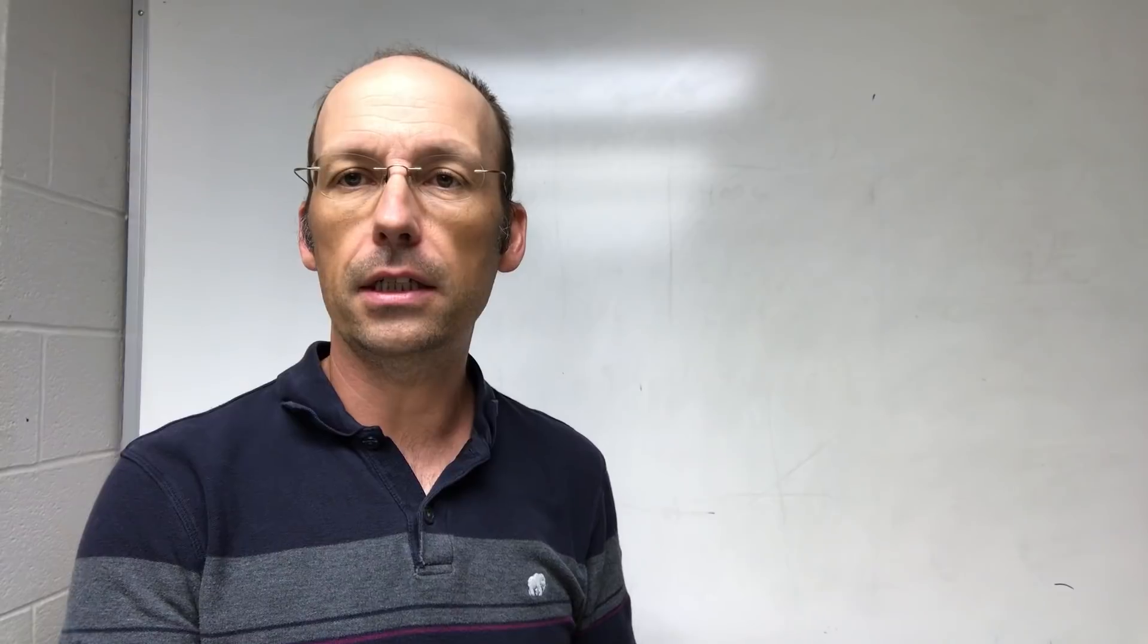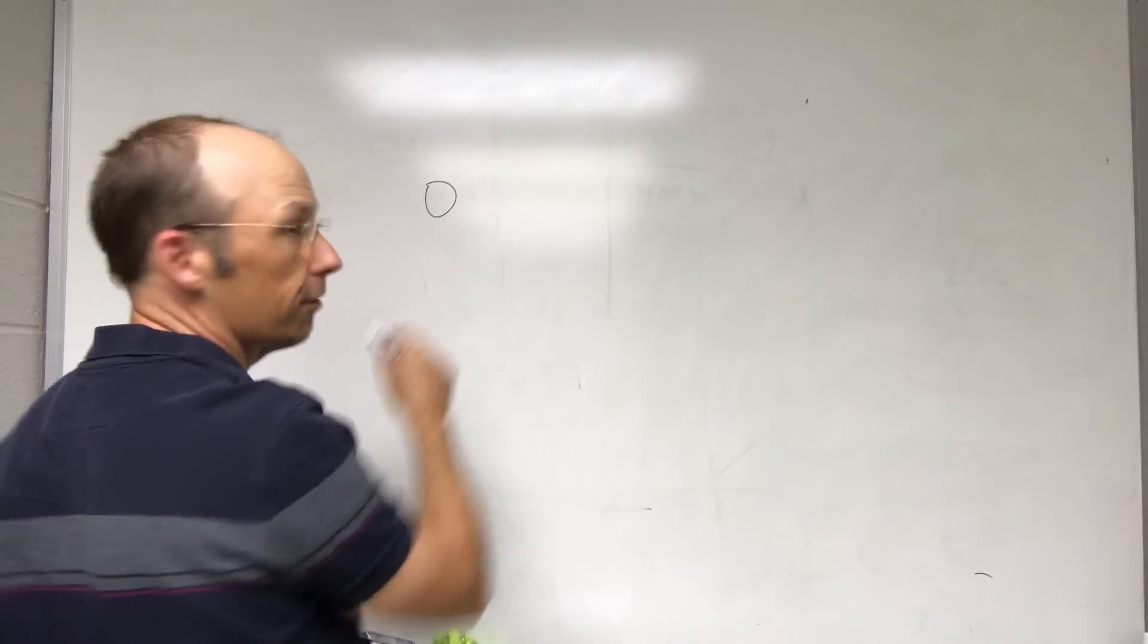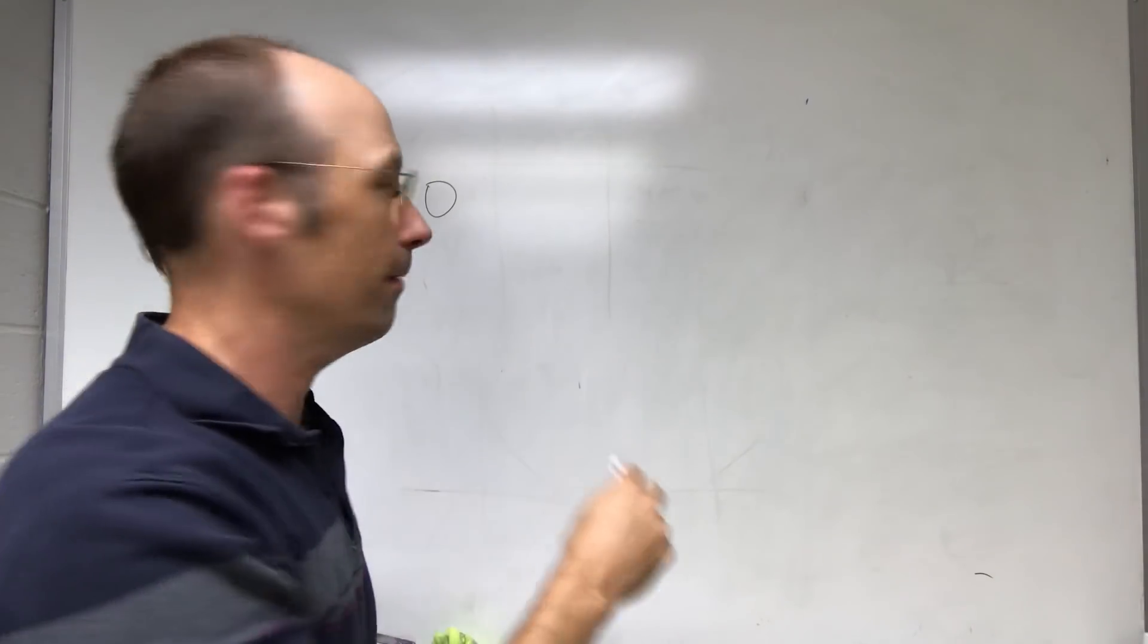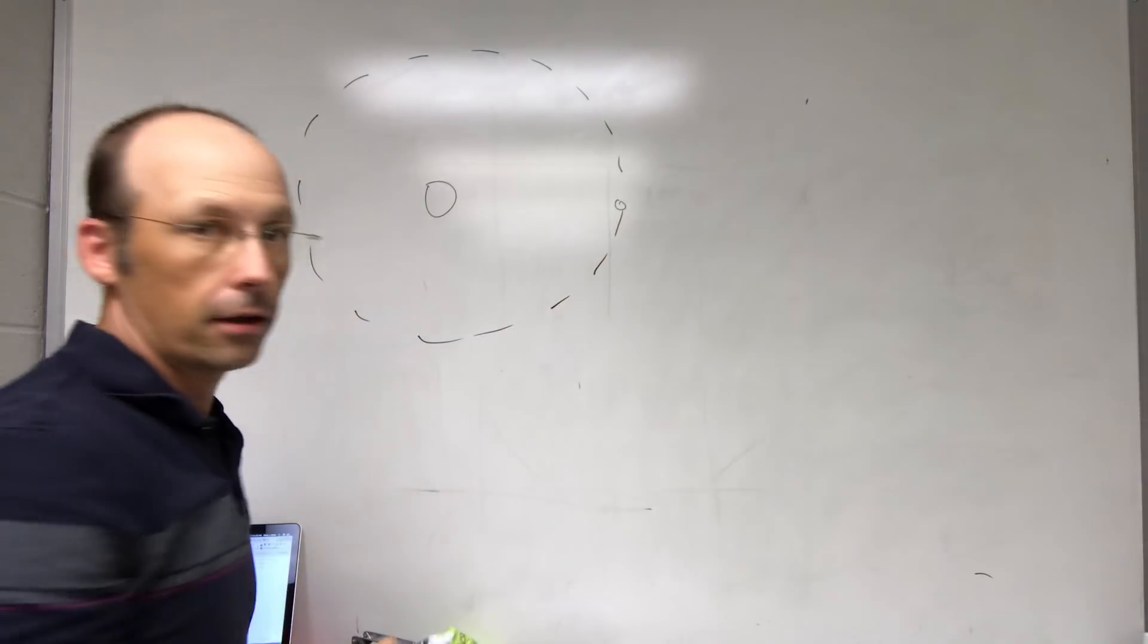Okay, so the first is the idea of an astronomical unit. So here I have the Sun. Don't look at the Sun. Okay, you can look at that. And then here's the Earth orbiting the Sun.